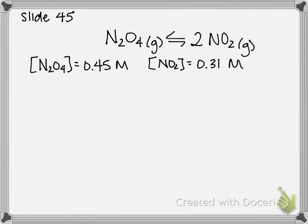So written on the slide, I have the equation. And then these two compounds in brackets, those represent the concentrations that we were given in the problem. 0.45 molar dinitrogen tetroxide and 0.31 molar nitrogen dioxide.